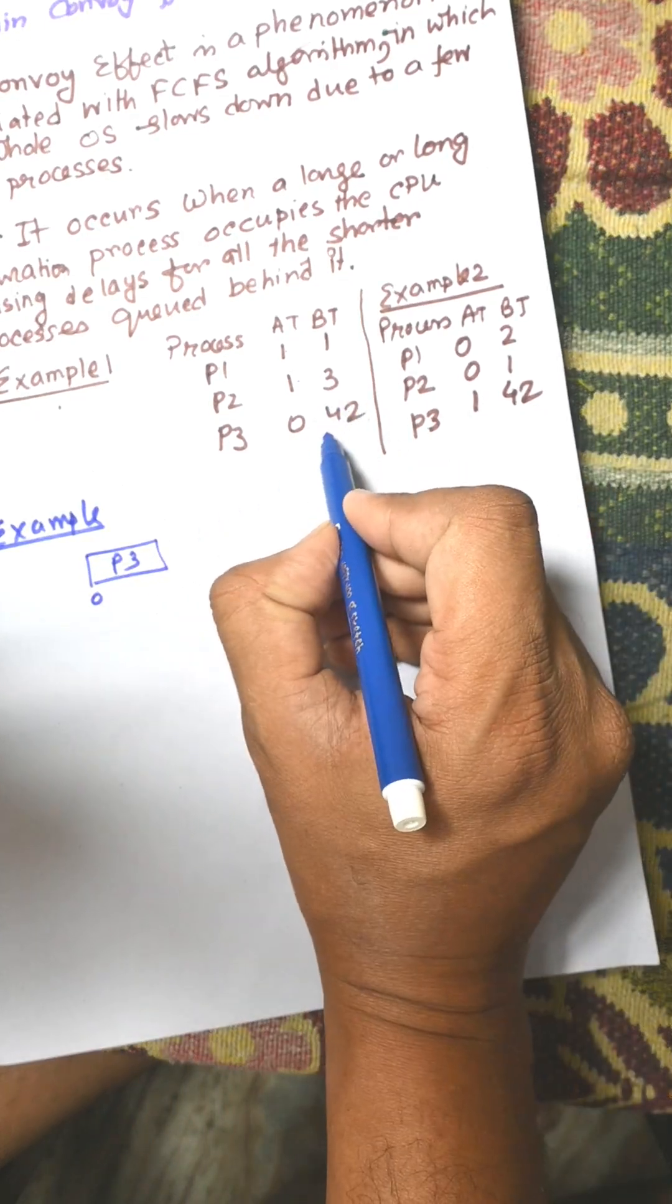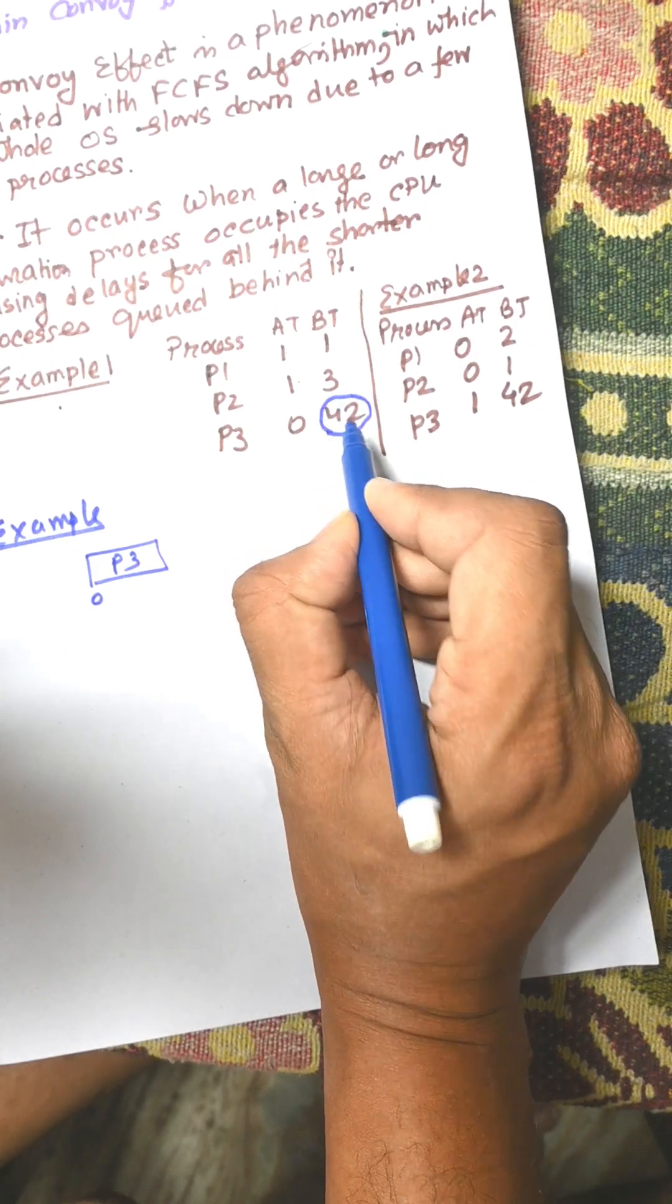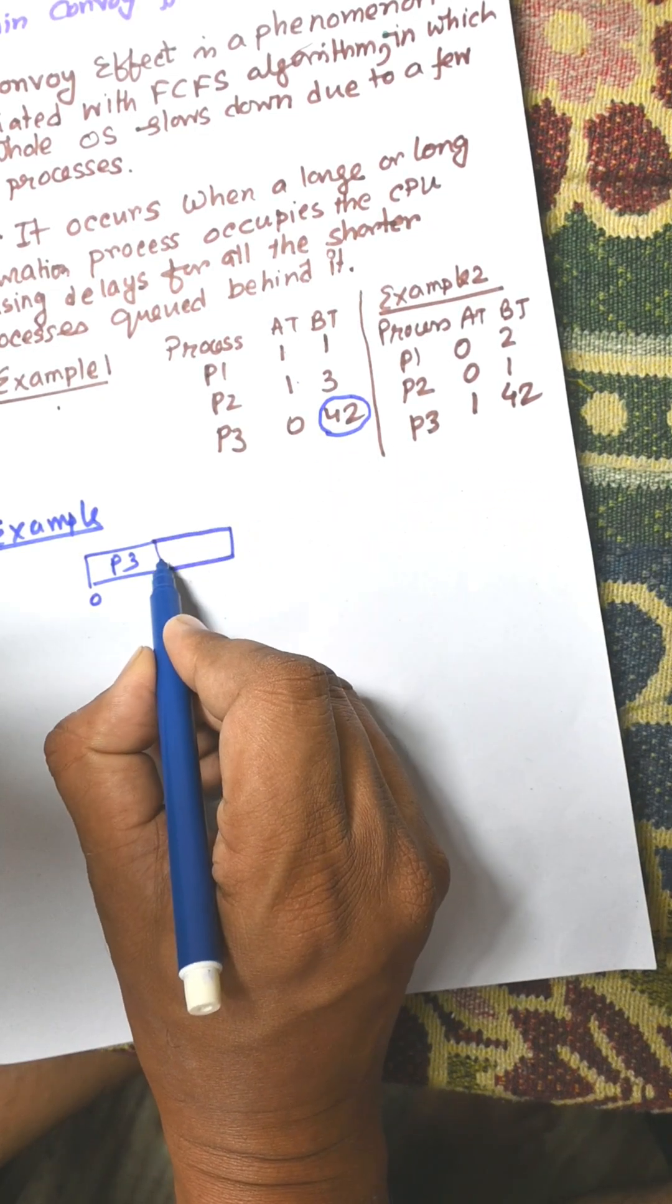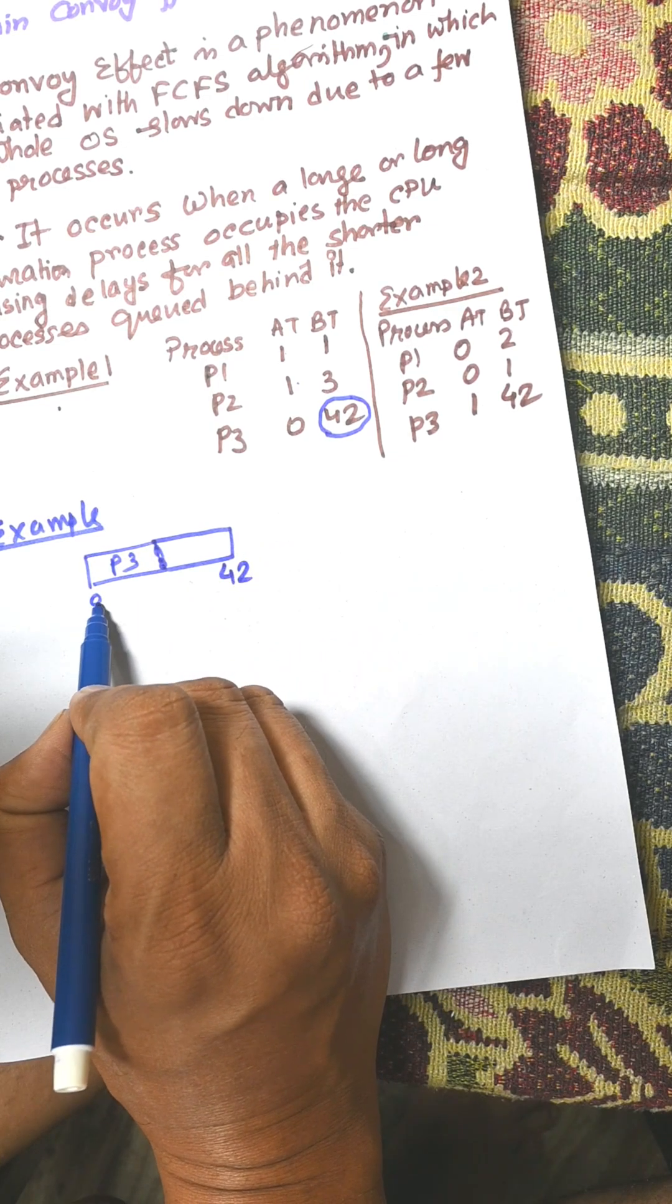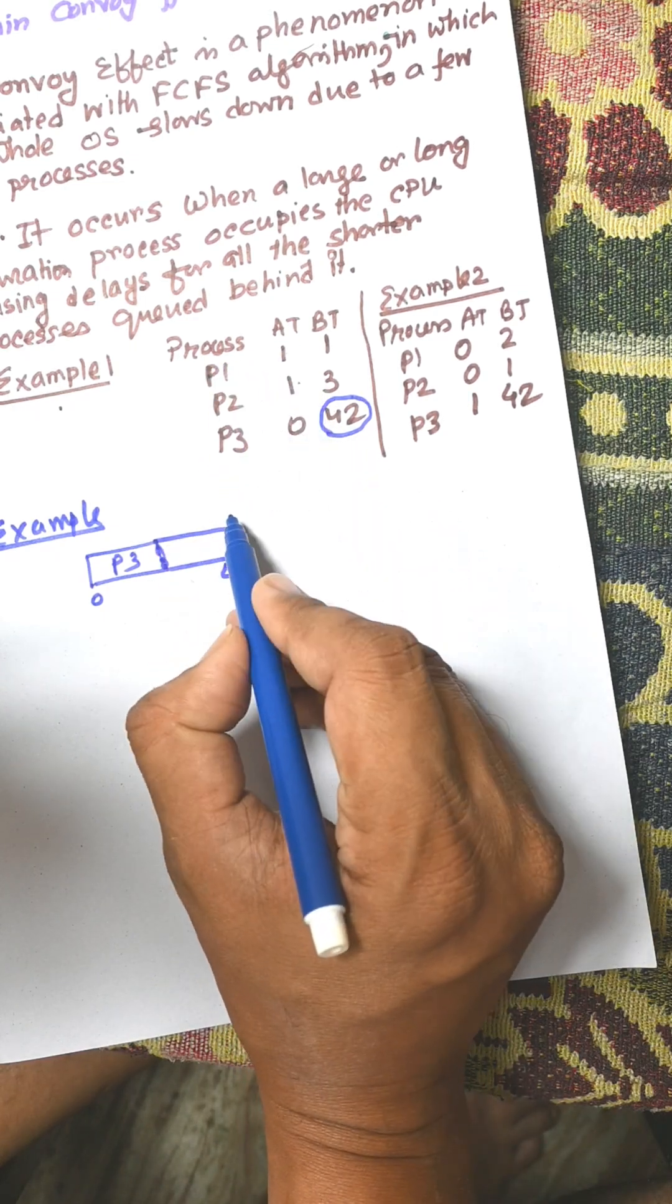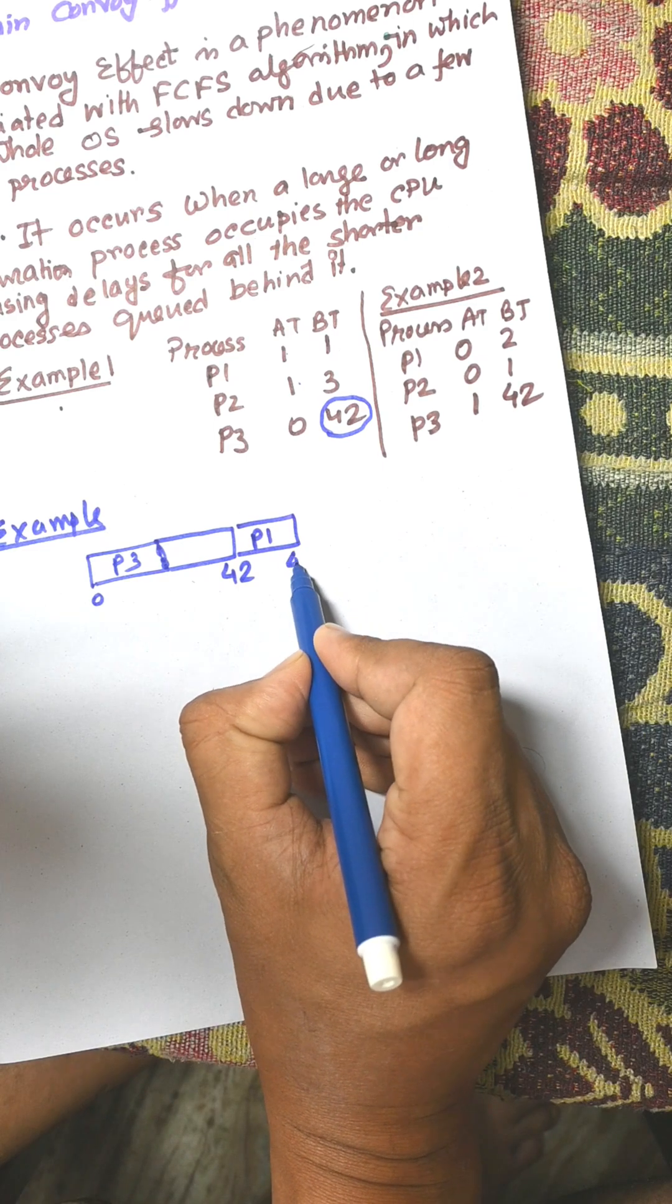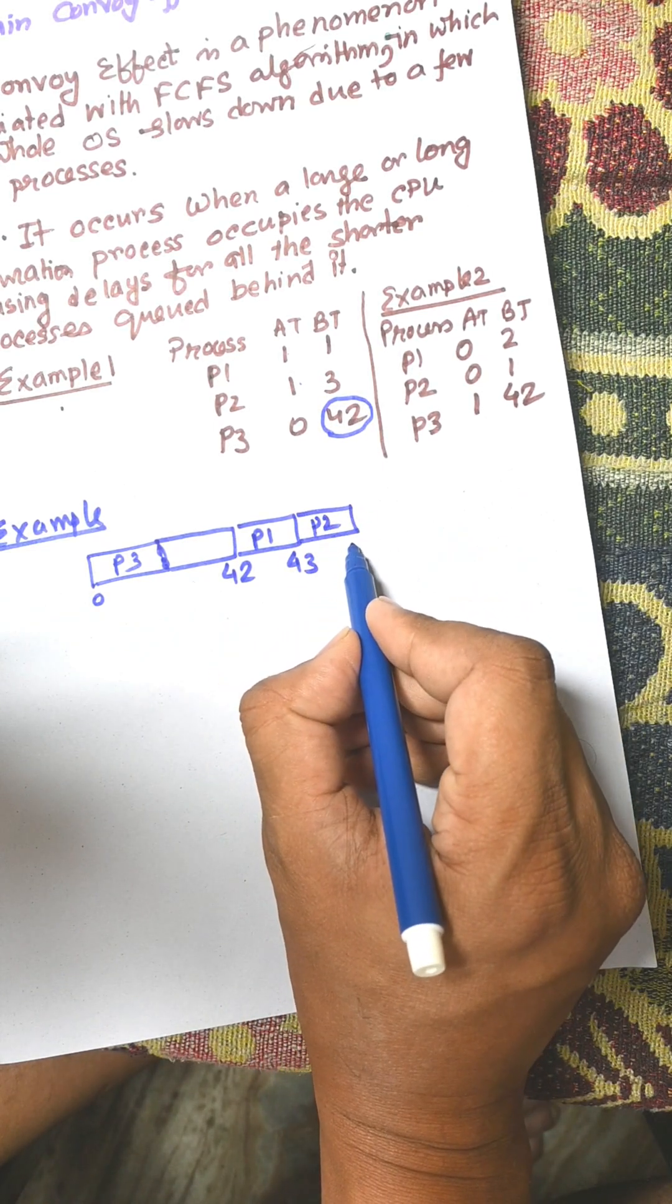P3 is a long duration process with burst time 42. So all other processes will wait for P3 to complete. When it is completed, among P1 and P2, first P1 will be selected with burst time of 2, completing at time 43. Then P2 will be selected, completing at 46.